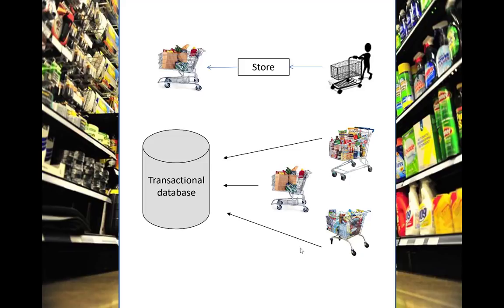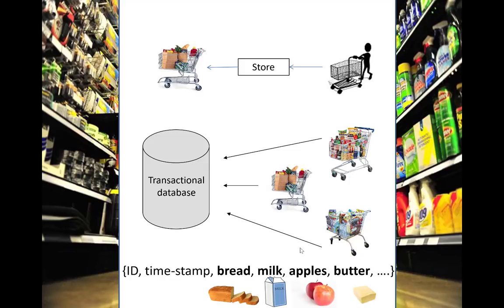A transaction looks like this: a possible ID, a timestamp, and then a list of items purchased. Each transaction has a different length, of course. For example, one transaction might contain bread, milk, apples, and butter.